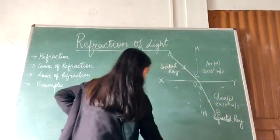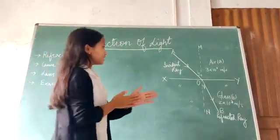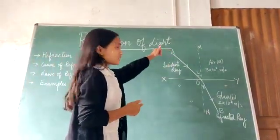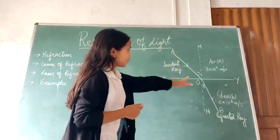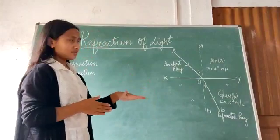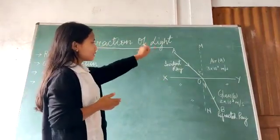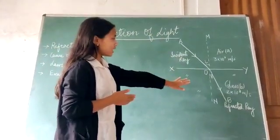So from here, we see that this speed of light, it decreases as it goes from this air to glass, as it passes from air to glass, it decreases. It means that it goes from this rarer medium, which is air, to a denser medium, which is glass.